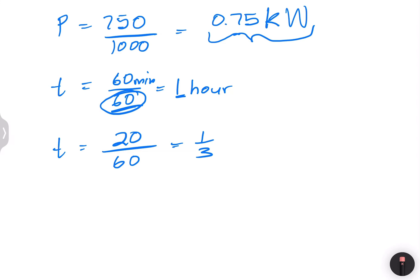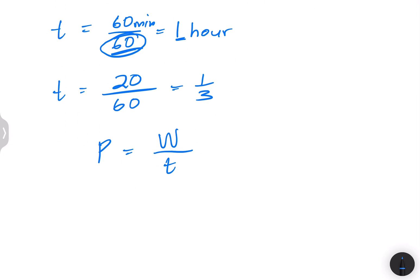So now, remember, we say, well, in this case, energy or work done is the amount of power or rather, let me put it in its original form. Power is energy divided by time. Or in this case, we want the energy. So this is power multiplied by time. So to express it in kilowatt hours, power in kilowatts is 0.75 multiplied by the time in hours.